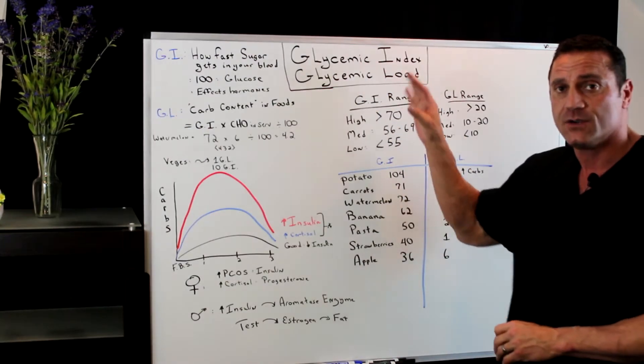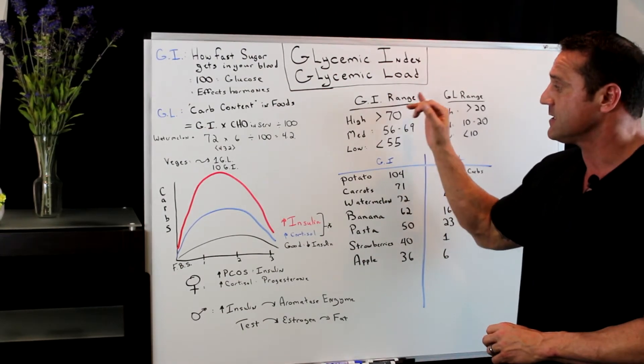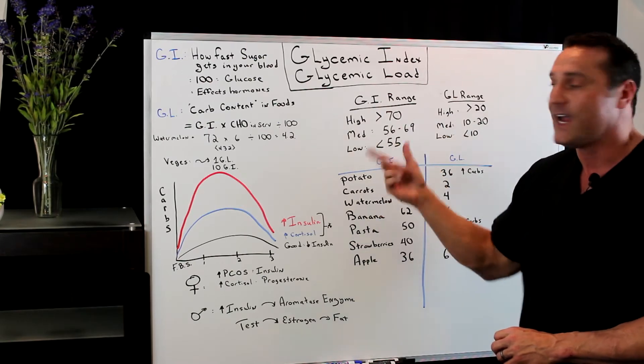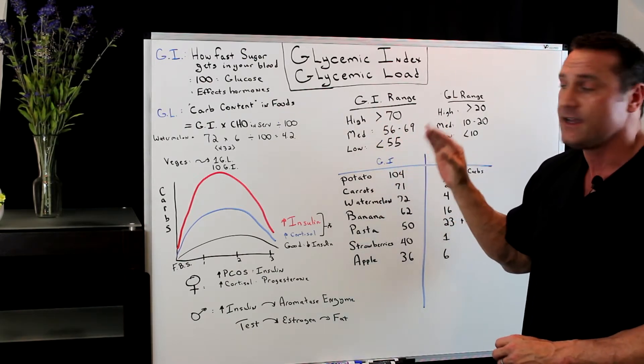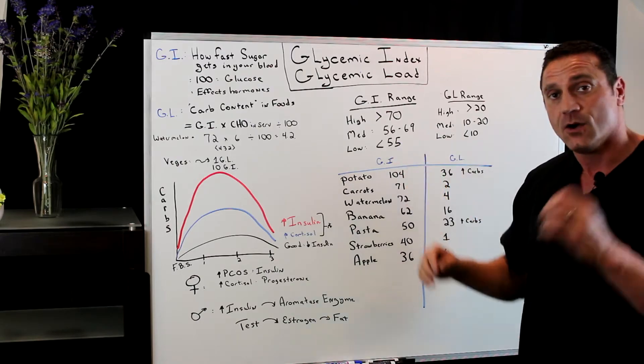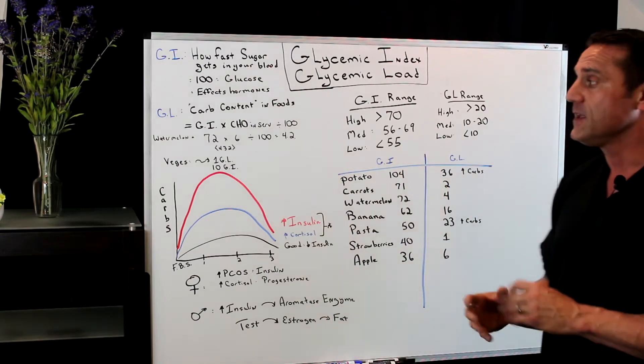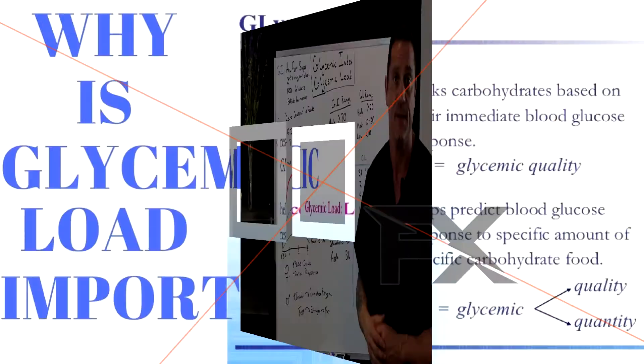There are certain foods. You're looking at the glycemic index range, high above 70, medium 56 to 69, and lower than 55. The next one is the glycemic load.